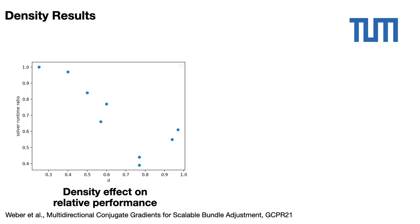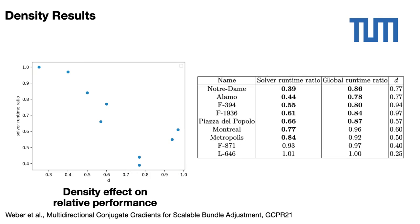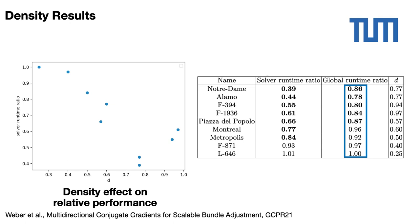Finally, we plot the relative performance of MCG with respect to the density D of the Schur complement matrix. Each blue point represents a bundle adjustment problem. Our solver competes with PCG for sparse Schur matrices and leads to a significant speedup for dense Schur matrices. More precisely, MCG is up to 61% faster than PCG for dense Schur matrices, and the global bundle adjustment resolution is up to 22% faster.